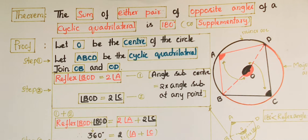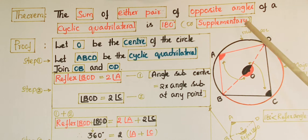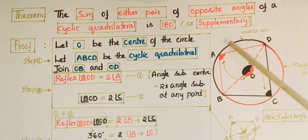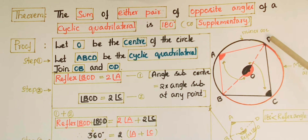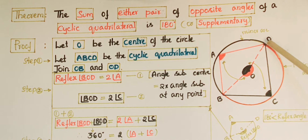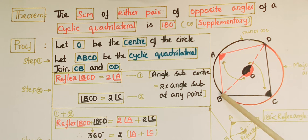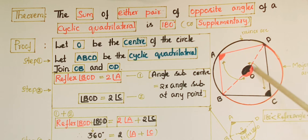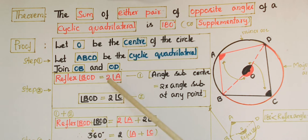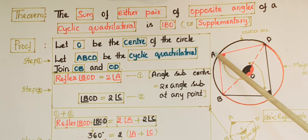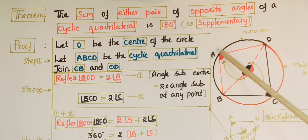Now I am going to tell the proof that the sum of either pair of opposite angles of a cyclic quadrilateral is 180 degrees or supplementary. Let O be the center of the circle and ABCD is the cyclic quadrilateral because all the vertices lie on this circle. Join OB and OD. Arc BCD is the major arc because it is greater than a semicircle, and this major arc subtends the angle at the center, which is reflex angle BOD.